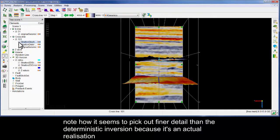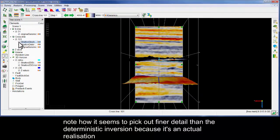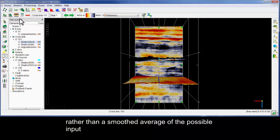Note how it seems to pick out finer detail than the deterministic inversion, because it is an actual realization rather than a smoothed average of the possible input.